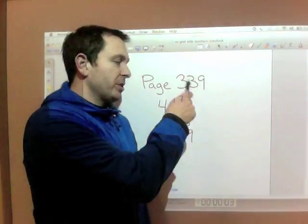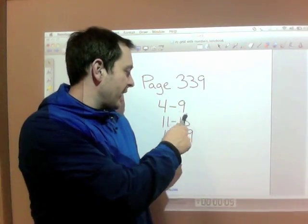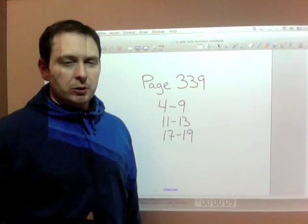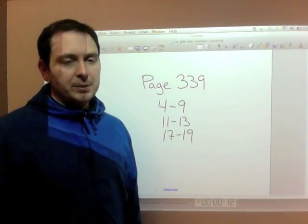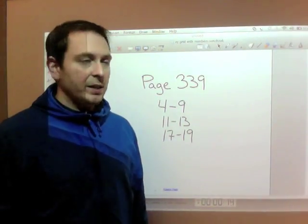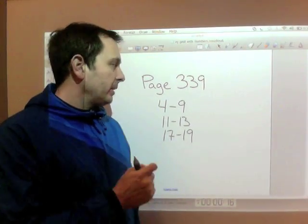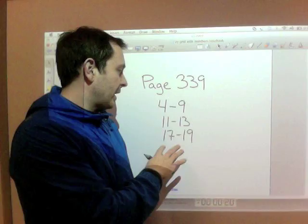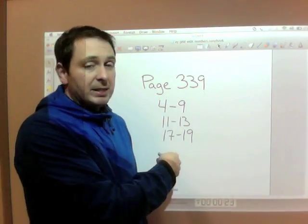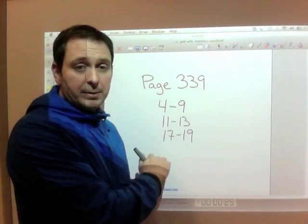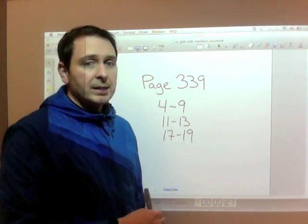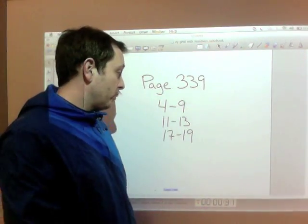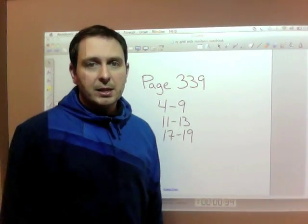Your assignment today is page 339, questions 4 to 9, 11 to 13, and 17 to 19. Slope is something that will come up for the rest of the year — chapters 6 and 7 are both slope-heavy. If you don't understand slope, please come see me for extra help, because you really need to understand these concepts. Do all parts of each question: A, B, C, D, E, F, G. If you're not getting them quickly, you need more practice. Good luck — stay classy, math class.